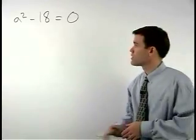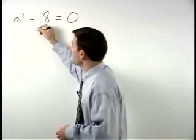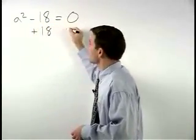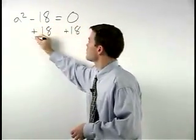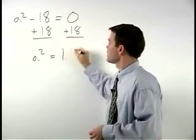Our first step in this problem is to get the a squared term by itself by adding 18 to both sides. That gives us a squared equals 18.